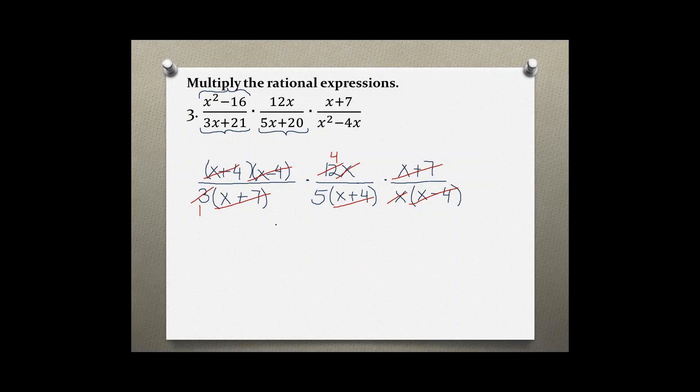So on top, the only thing I have left is 4, and in the bottom, the only thing I have left is 1 times 5, which is 5. So the solution of this rational expression actually comes out to be a fraction without variables, 4 over 5.